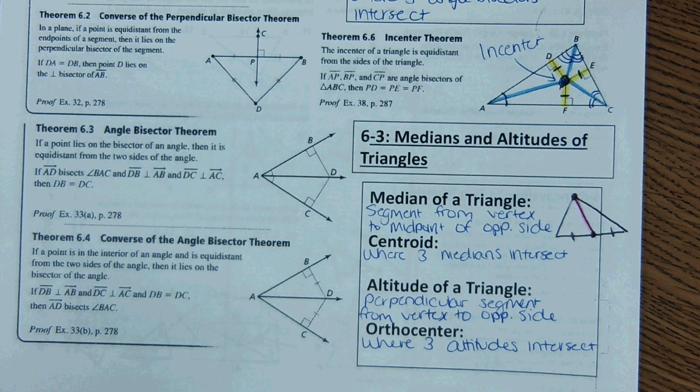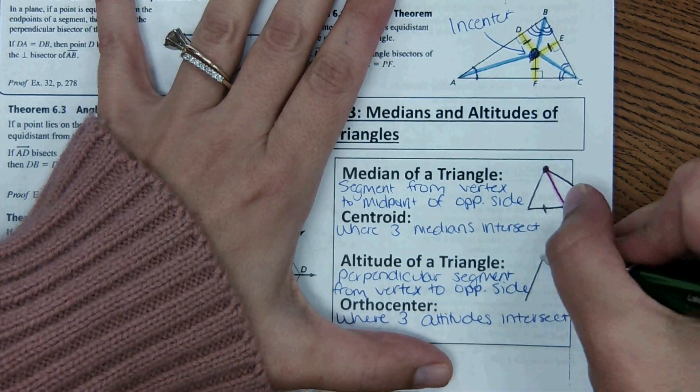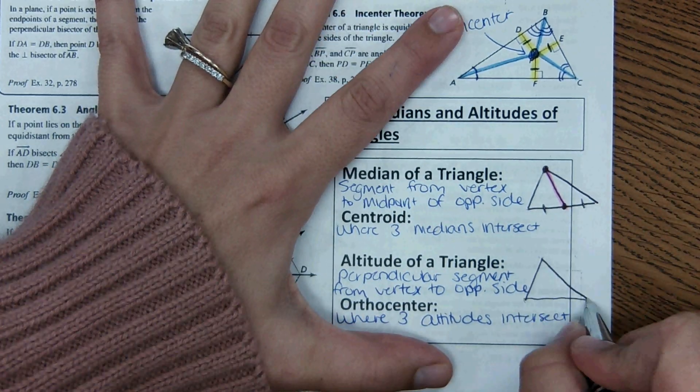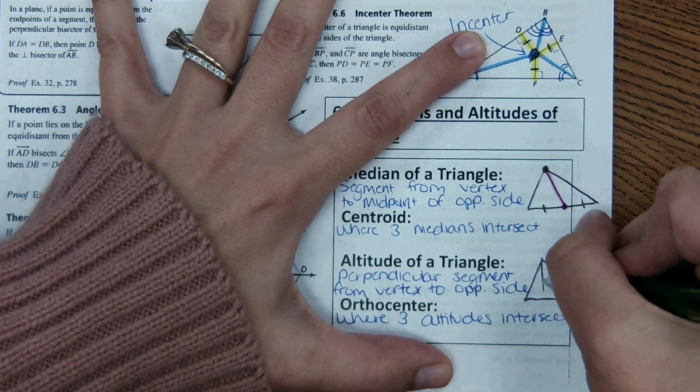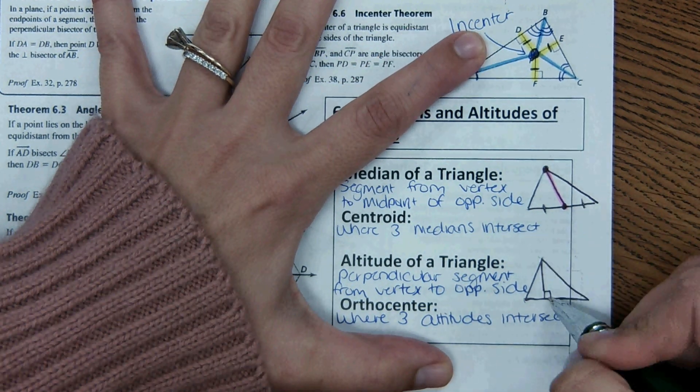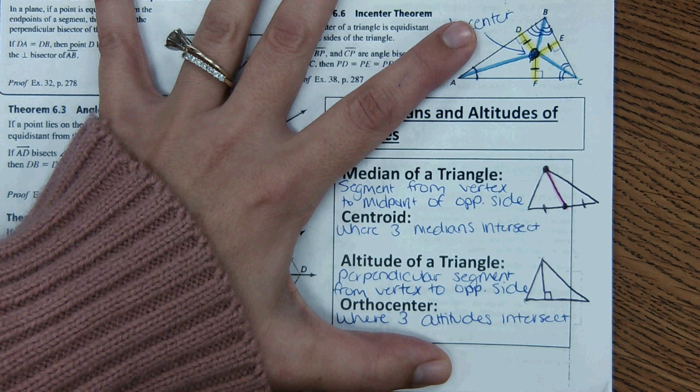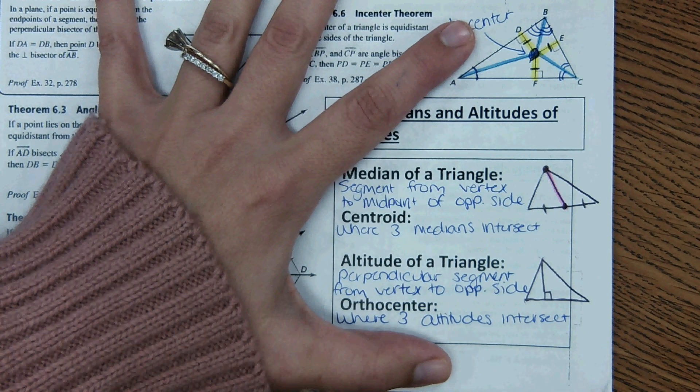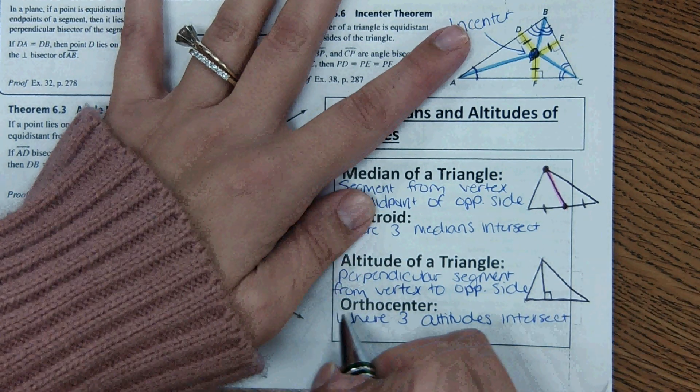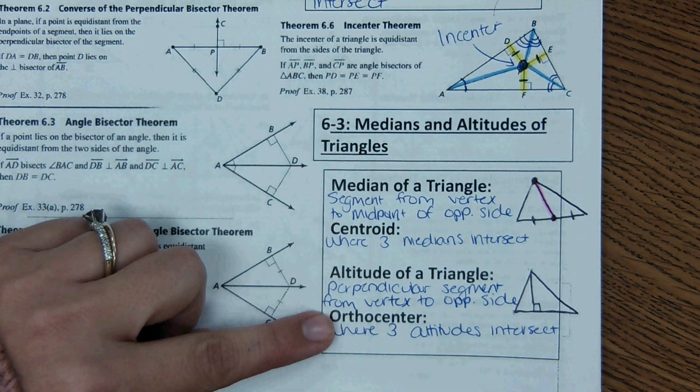Then the next word is altitude of a triangle. Altitude of a triangle is something you've actually seen a lot because you use the altitude to find area of a triangle. So the altitude is a perpendicular line segment that connects a vertex to the other side. And then if you had three altitudes, they would intersect at something called the orthocenter.